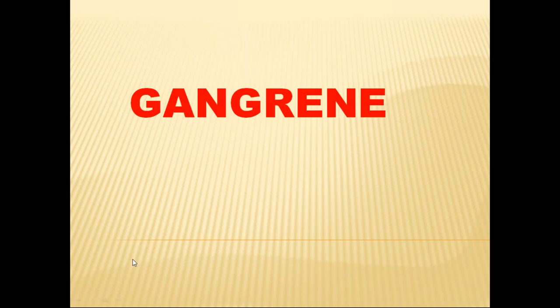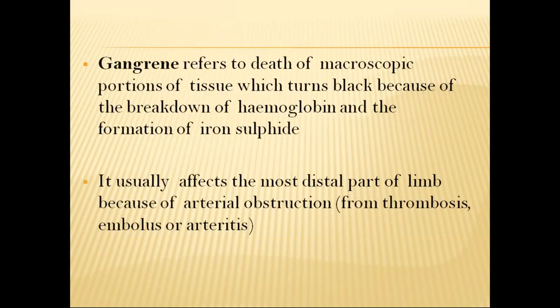Good afternoon everyone. We will be discussing gangrene. Gangrene is the macroscopic death of tissue which turns black because of the degradation of hemoglobin and the formation of iron sulfide. It usually affects the most distal part of the limb because of arterial obstruction, which might be due to thrombosis, embolus, or arteritis.